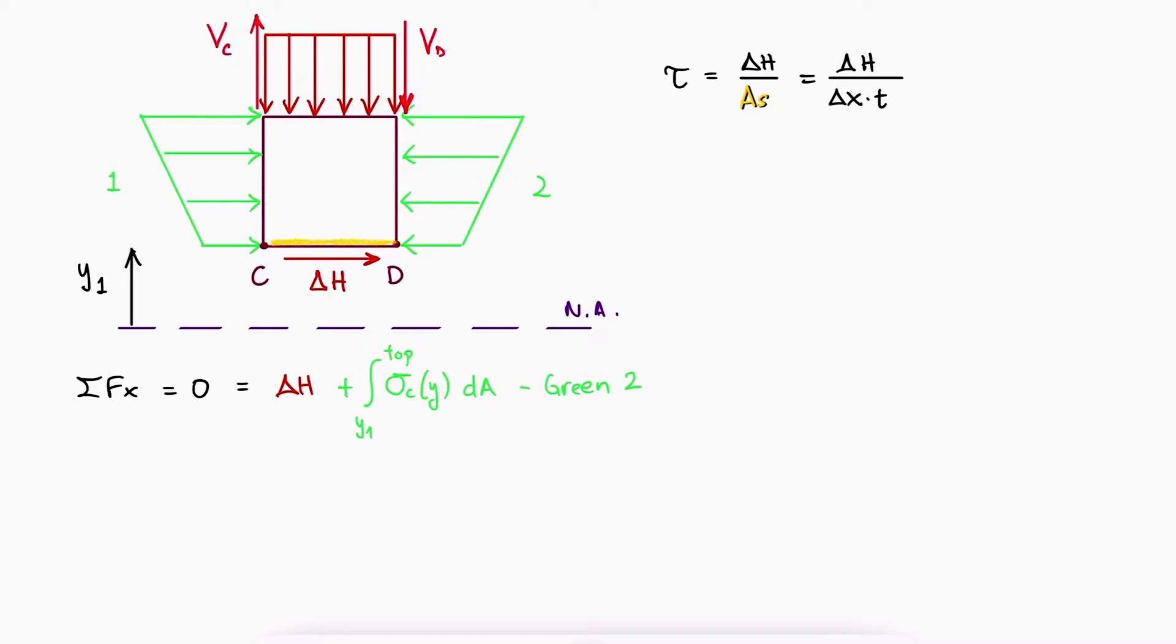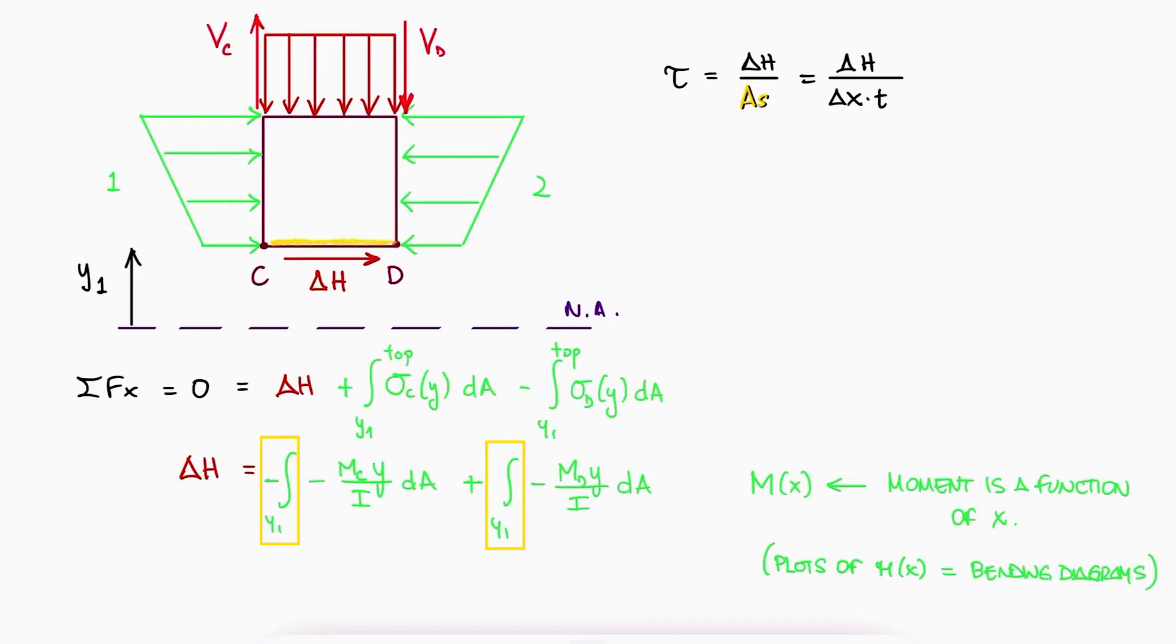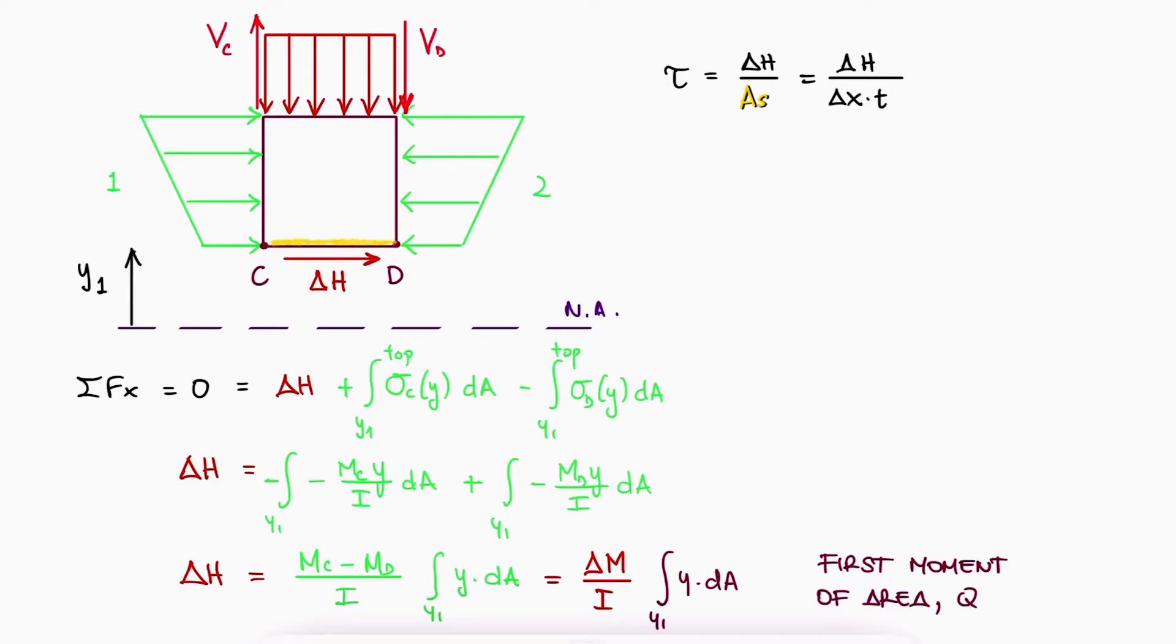The total force on the right face would be the same expression, with sigma d instead of sigma c. Since we know that the normal stress sigma is the normal stress due to bending, sigma can be substituted by minus m y over i. The moments at d and c are different because we know that the moments can vary along the x-axis, but since the moments are constant along the y-axis, which is what we're integrating them over, both the moments and the second moment of area i can be taken outside of the integral. Delta H is therefore equal to delta m over i times what we call the first moment of area q.